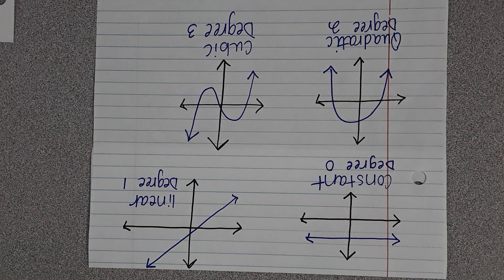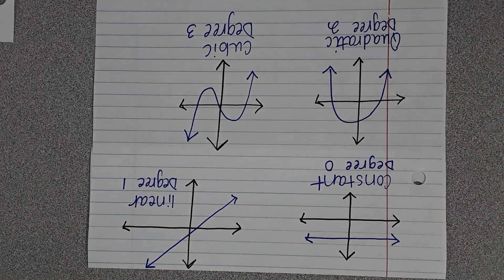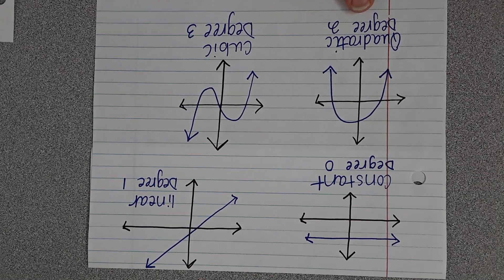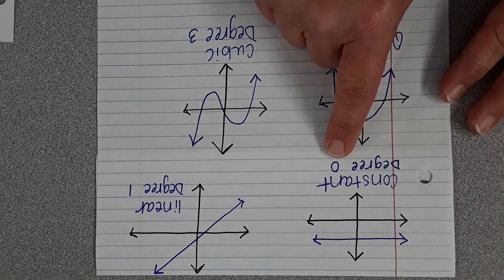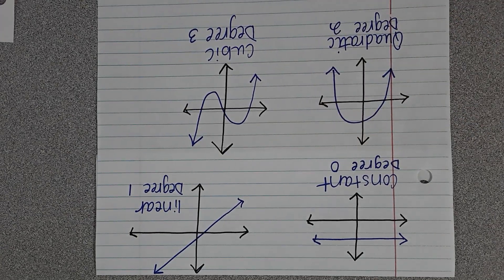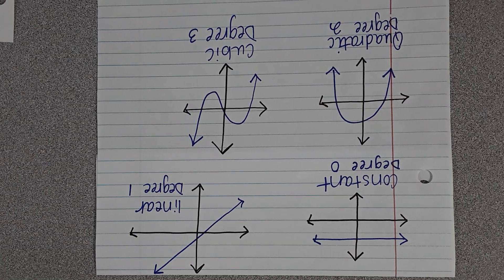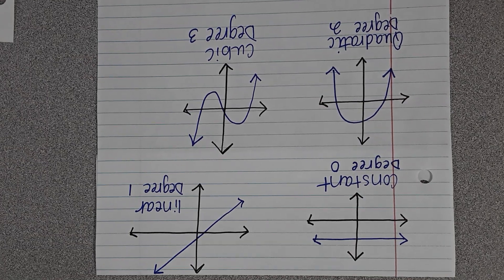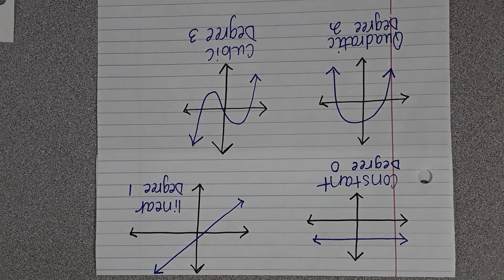A constant function, a linear function. Notice constant and linear, they're both lines. There's quadratic and there's cubic. A constant term has degree zero, which means there's no variable. A linear term means the exponent is one. Quadratic, the highest exponent is two, like x squared.